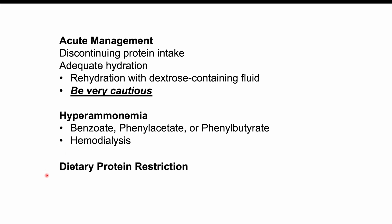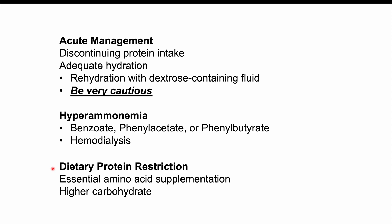For long-term management, a restricted protein diet is used since amino acid metabolism produces ammonia. Because protein is restricted, patients must be supplemented with essential amino acids. To compensate for reduced caloric intake from less protein, carbohydrates can be slightly increased to make up those calories. The goal is to reduce protein intake while ensuring patients receive adequate essential amino acids.